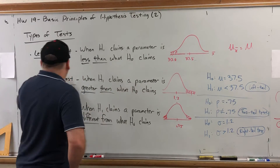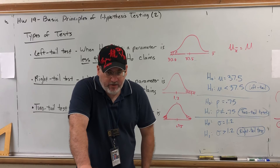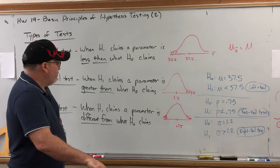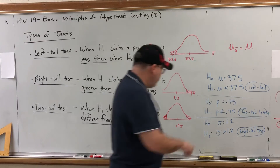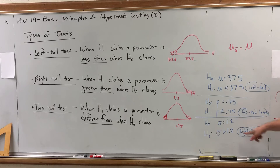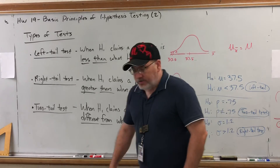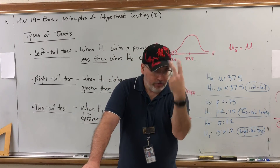To summarize: if your alternative hypothesis says 'less than,' it's a left tail test and we shade the left tail. If your alternative says 'greater than,' it's a right tail test and we shade the right tail. If your alternative says 'not equal to,' it's a two tail test and we shade both tails. The alternative less than is left tail, greater than is right tail, and not equal to is two tail.